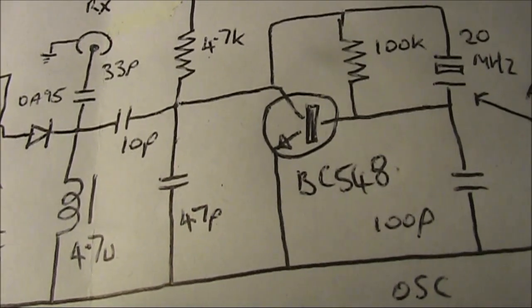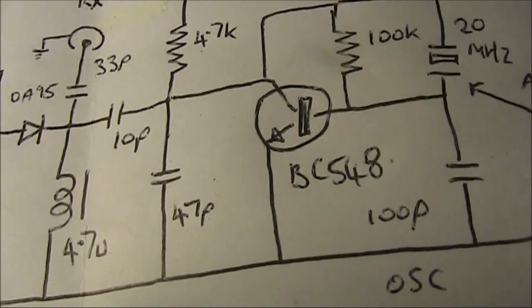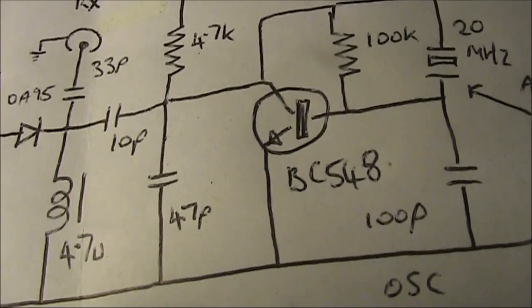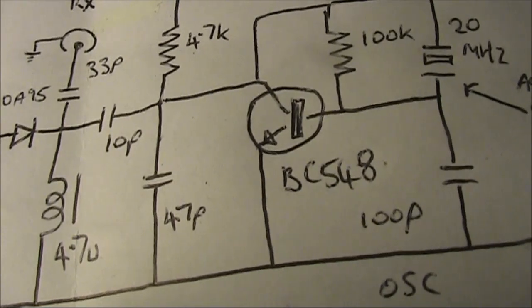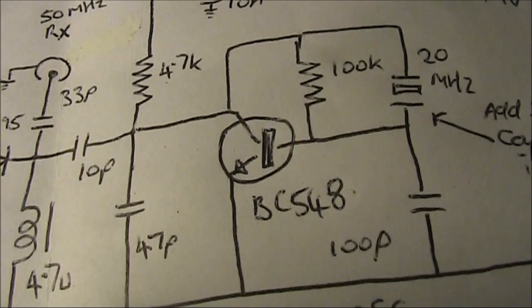So if that's a problem, if you're near an FM broadcast signal and it's on the wrong frequency, then you may need to build a more advanced converter, one with a tuned circuit on the output of the oscillator.